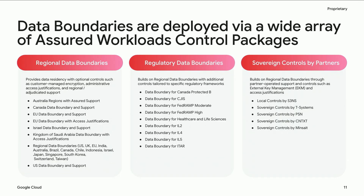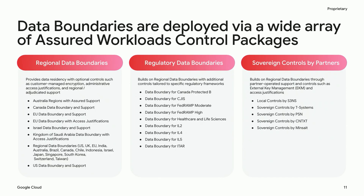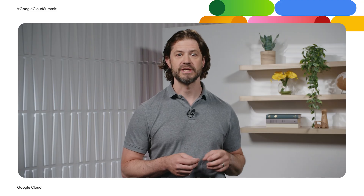We already offer a wide array of regional data boundaries across Americas, Europe, Middle East, and Asia, available in every Google Cloud region today. We have a deep portfolio of regulatory data boundaries for the U.S. public sector, including FedRAMP, IL2, IL4, IL5, ITAR for arms control, and CJIS. We also meet Canadian public sector requirements for Protected B and continue to expand. We support key verticals such as healthcare, including HIPAA and HITRUST. And we have our sovereign controls by partners offerings, which provide the highest levels of control through partners like SANS in France, T-Systems in Germany, Minsight in Spain, PSN and Telecom Italia in Italy, and Context in the Kingdom of Saudi Arabia. Partners offer managed EKM, access approvals, and local support, providing customers with even stronger guarantees for residency, sovereignty, and access control.